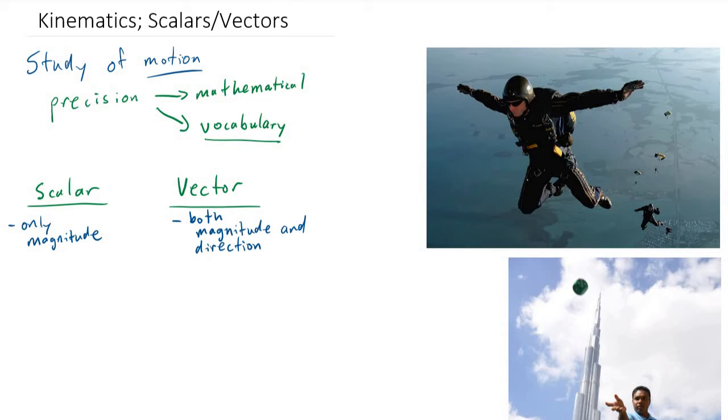whereas a vector has both a magnitude and a direction. So how big something is, but also which direction it's going. You should be able to see that a vector gives us more information about an object because we know both the magnitude and the direction. What does this mean? What's an example of a scalar or a vector?